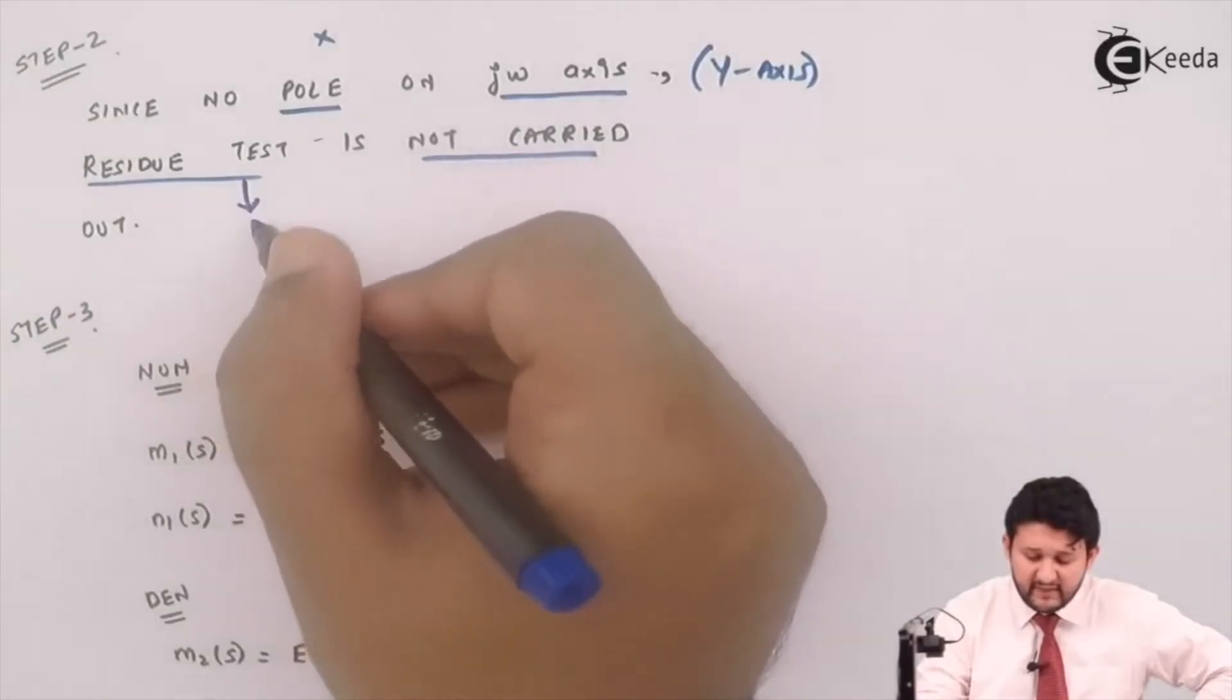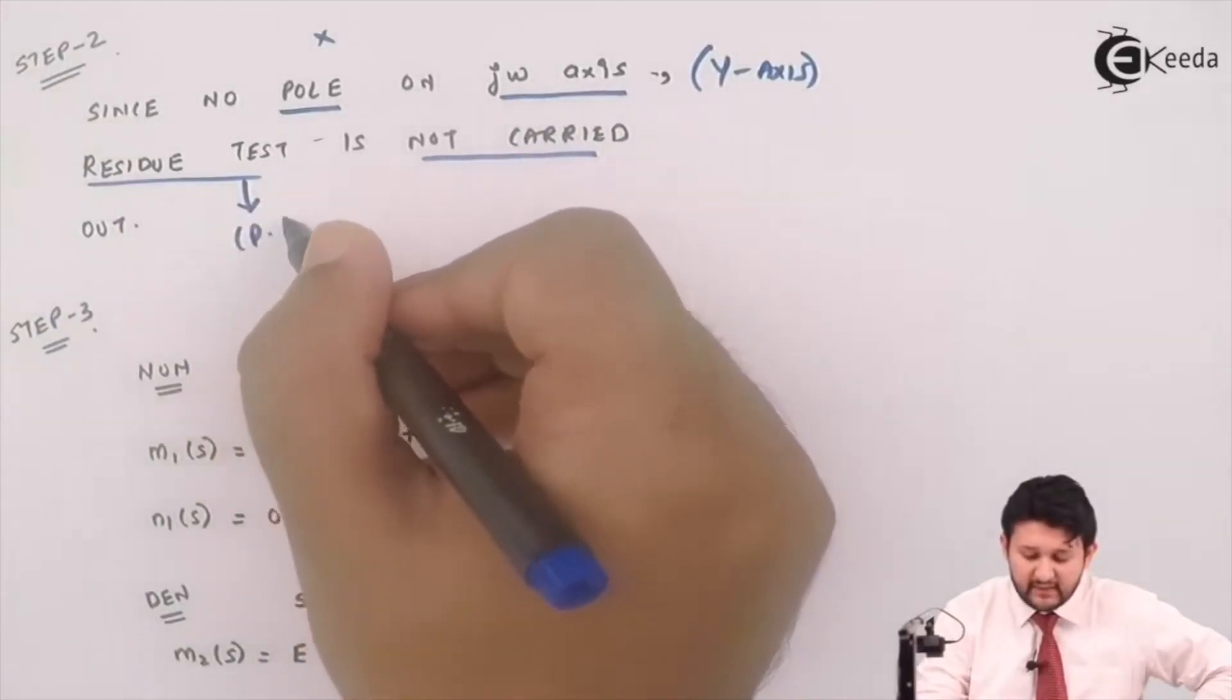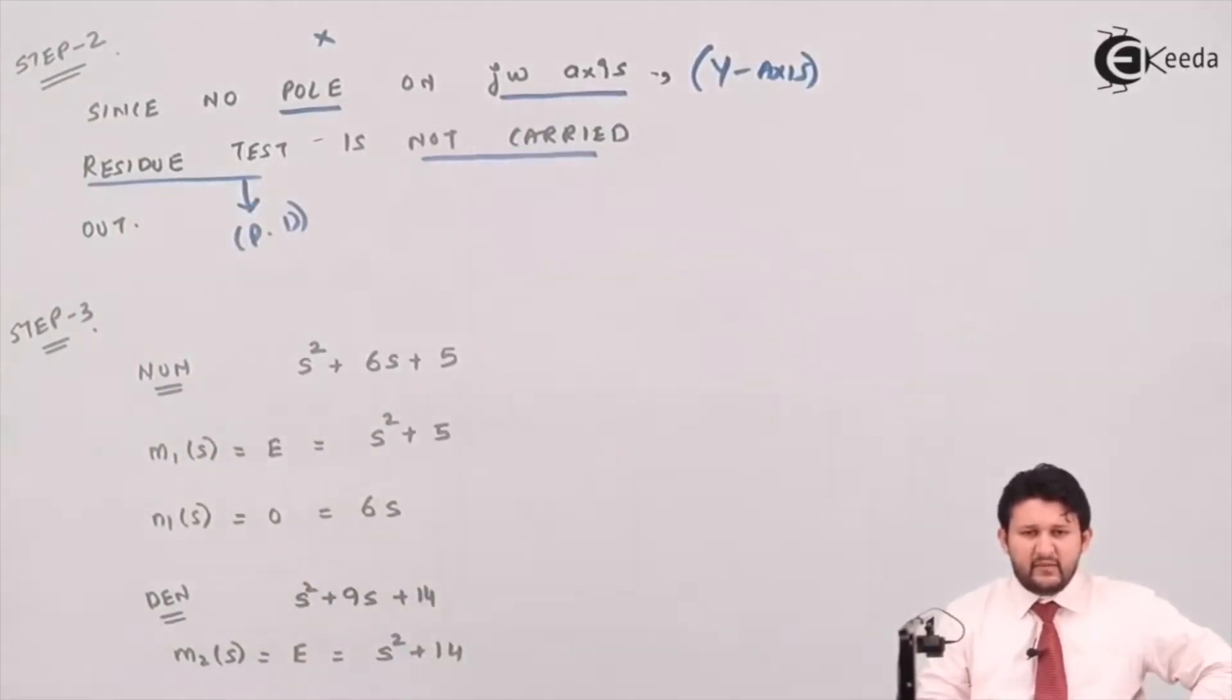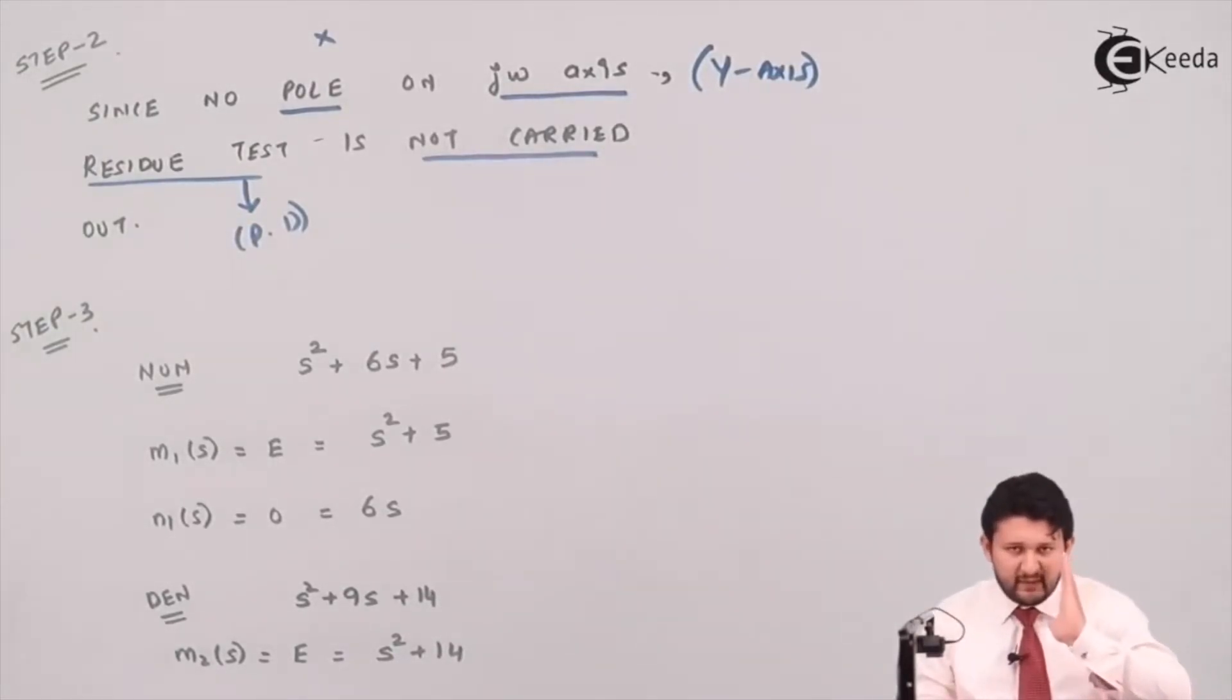Residue test is nothing but, my dear friends, you just need to apply partial fractions. So we'll take one more example of PRF in which we need to apply a residue test, so your concept will become much clearer. In this case, there was no pole on your jω axis, so no residue test required.